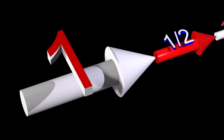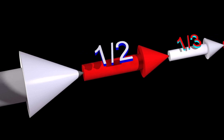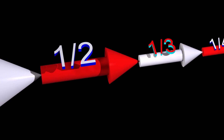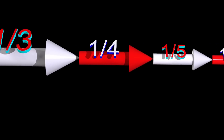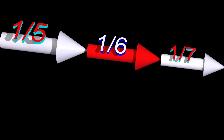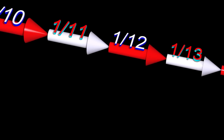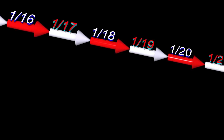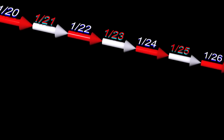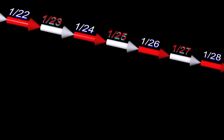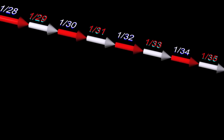Let's now consider a completely new example. Here, we have a sequence of numbers. The sum of this series does not converge to any finite number — the sum of this series approaches positive infinity.